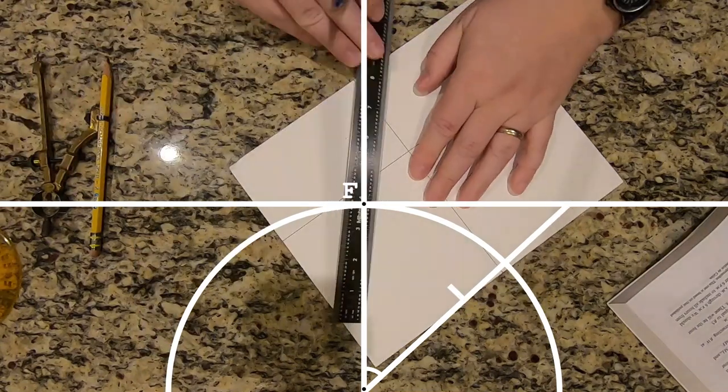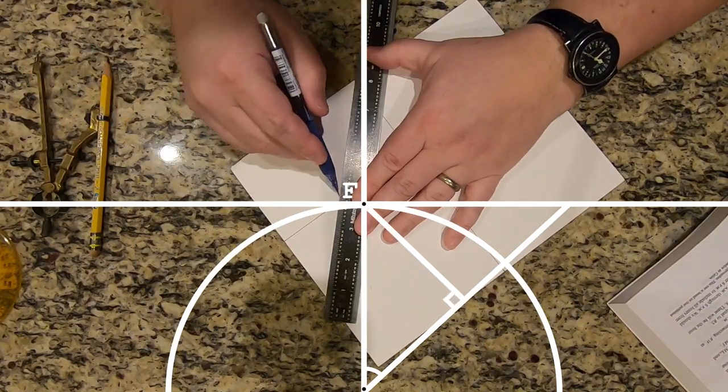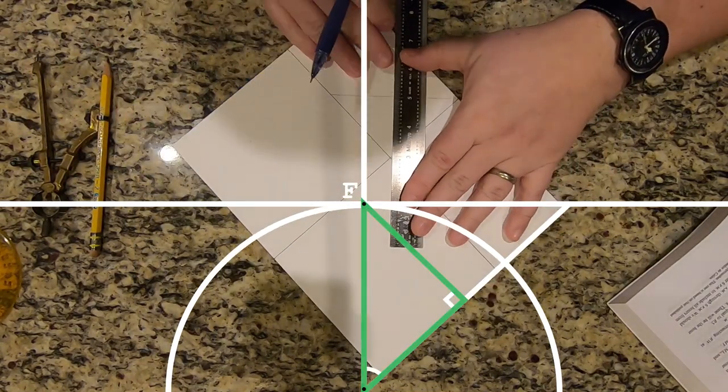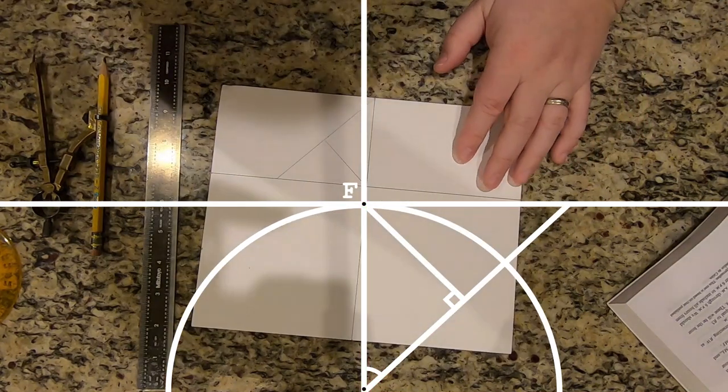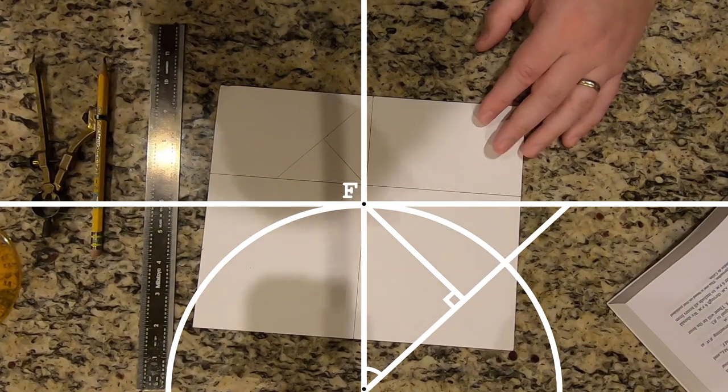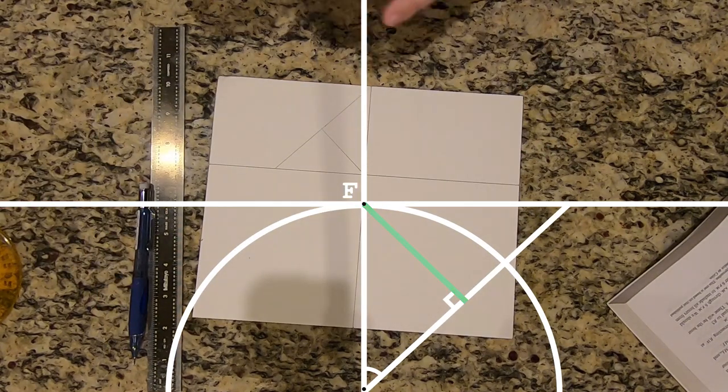From here we draw a perpendicular that intersects point F. This creates a right triangle, with the hypotenuse being the radius of our unit circle. Thus, by opposite over hypotenuse, the length of this line must be the sine of the latitude.